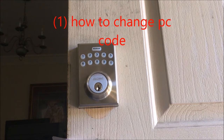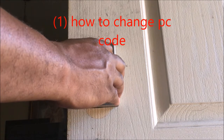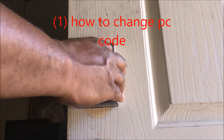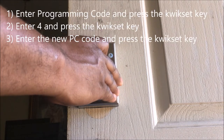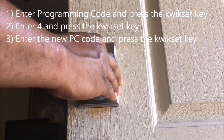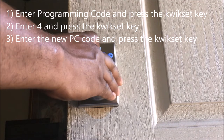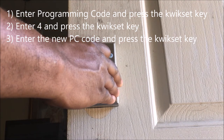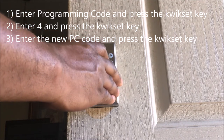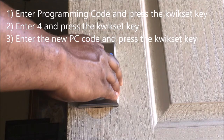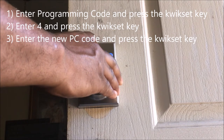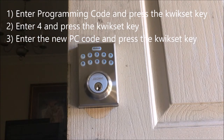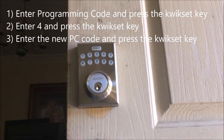First, enter the user code 0000 and hit Quick Set. Then hit 4 and hit Quick Set again. Now enter your new code — we've set a new PC code of 9999.